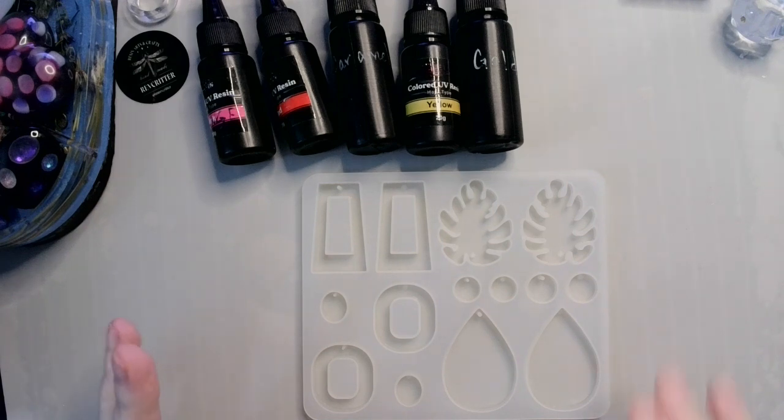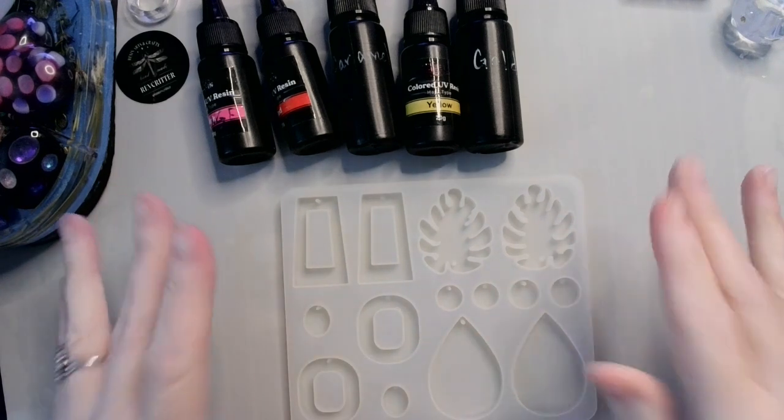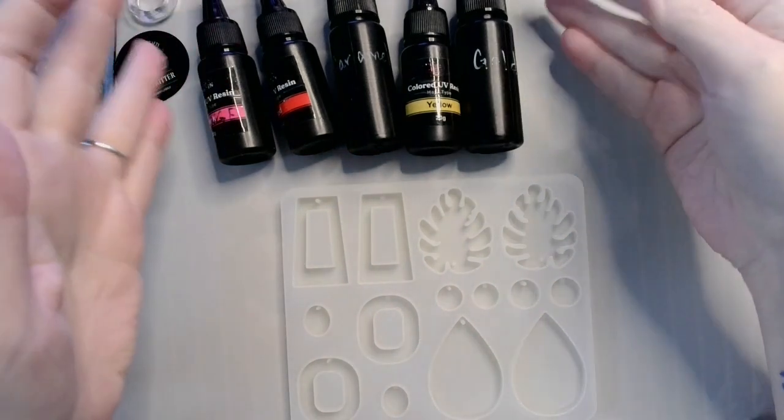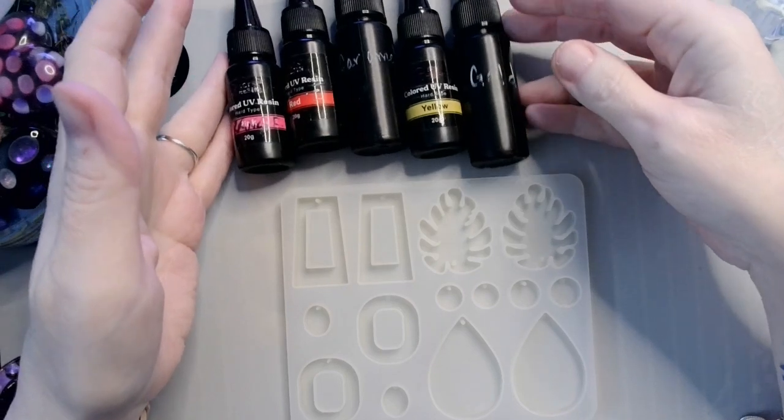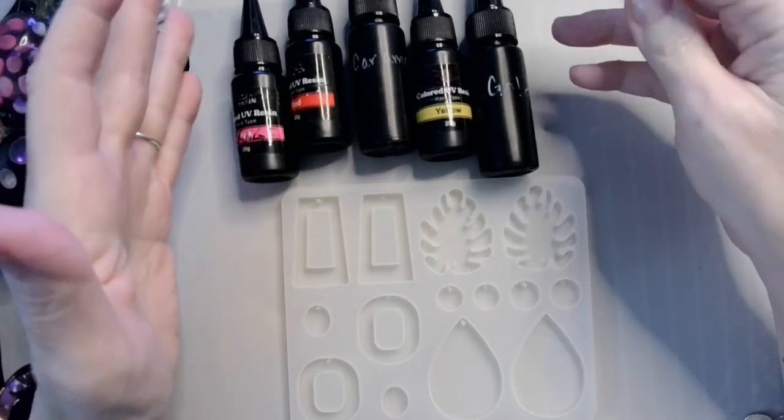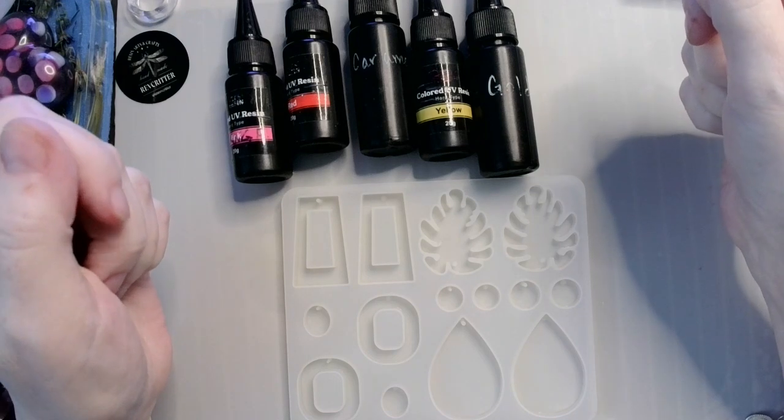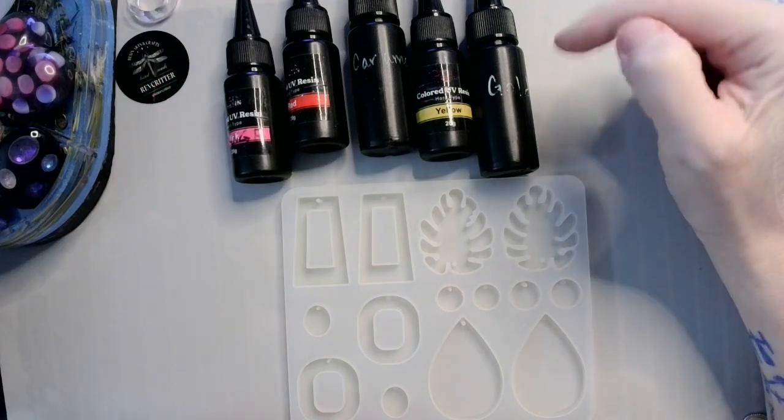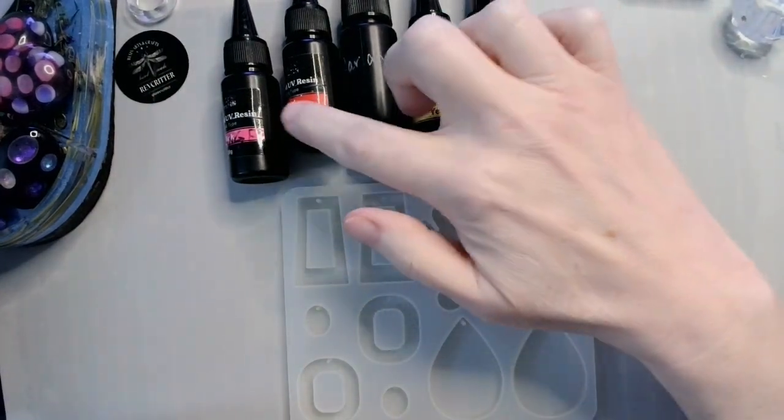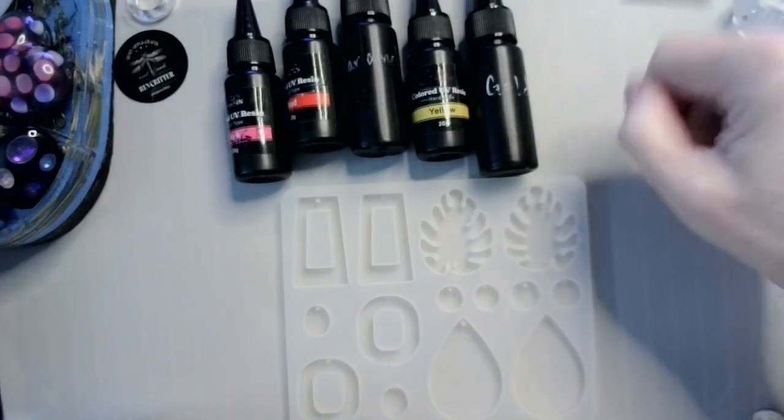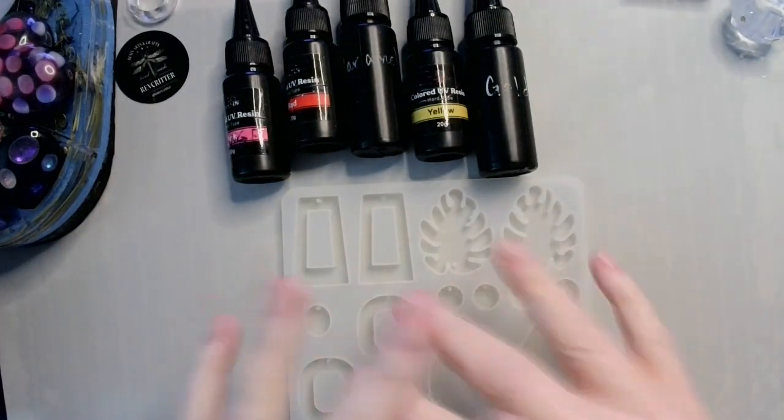So let's do, okay, so what I have up here is a variety of turkey-flavored UV resins. I have gold, yellow, caramel, red, orange. And what I'm going to do is I'm going to use those to make our turkeys.